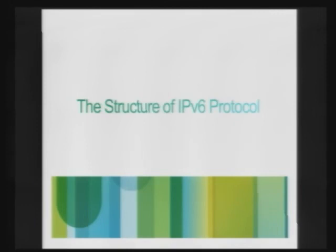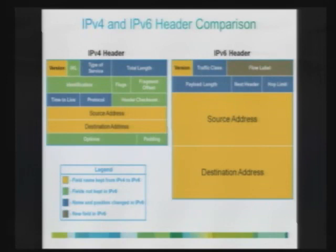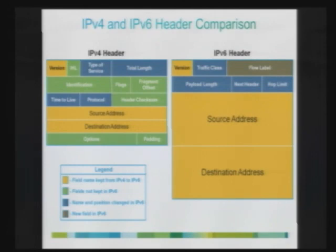Let us start looking at the structure of IPv6 protocol. Here is a side-by-side comparison of IPv4 and IPv6 headers. Even though the base header size for IPv4 is just 20 bytes, the IPv6 header has a fixed size of 40 bytes. IPv6 is much more simplified compared to IPv4, because in IPv4 the header could be as long as 60 bytes based on extensions — those extensions were never scalable due to implementation limitations.